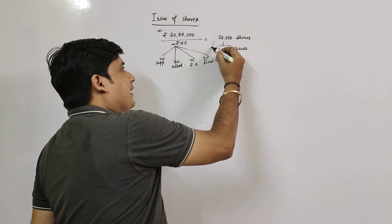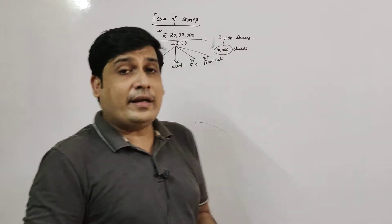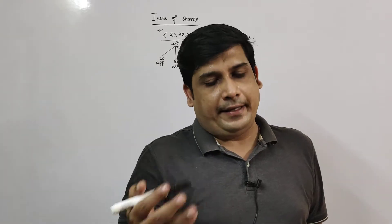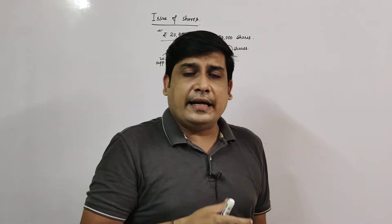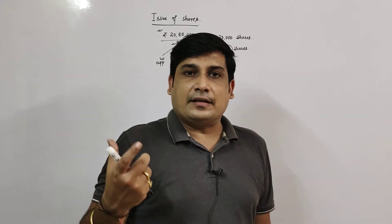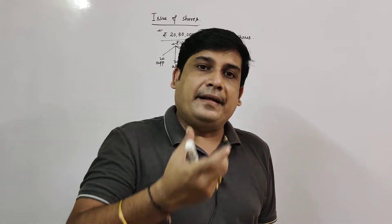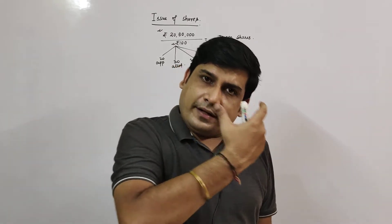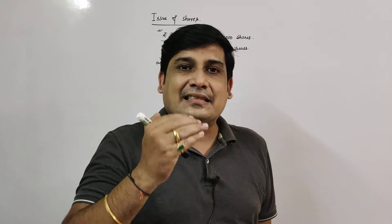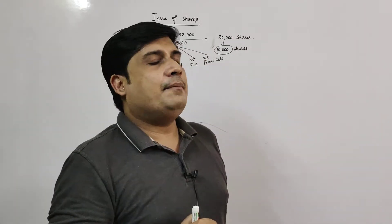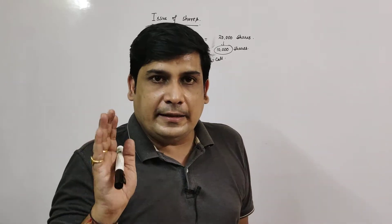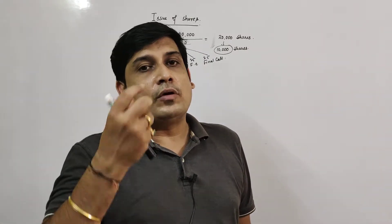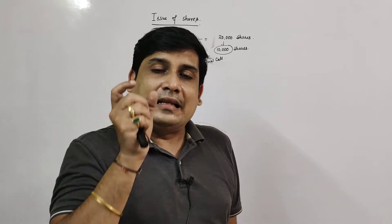When the company invites applications for 10,000 shares, people apply without knowing how many others are applying. When the company tallies, it finds excess applications have come in. The company has multiple options in over-subscription cases, but here the company has decided that the excess application money will be refunded. All those applicants had already paid their application money, so since company cannot allot to them, it will refund the excess.